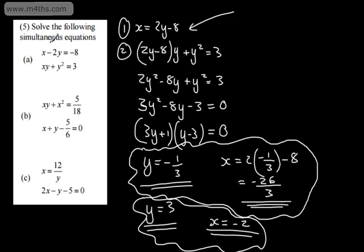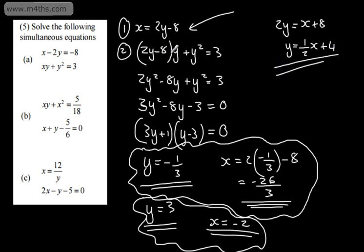The reason I'm suggesting to do it this way is if we had rearranged and made y the subject, we could have written y equal to one half x plus 4. Substituting that in twice and having to square it is going to make the algebra much harder. Looking ahead, that's why I chose x to be the subject and substituted in. Students sometimes forget to find x once they've found y, but it's important that you give both x and y.